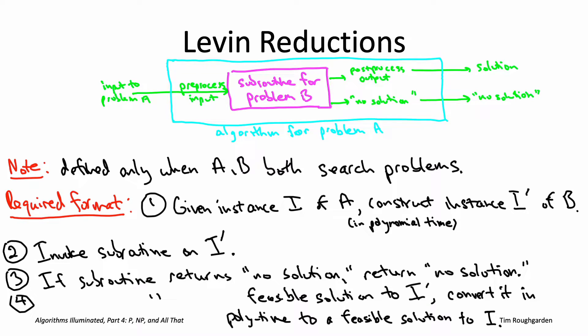In a decision problem, all an algorithm has to do is report yes or no — it's not responsible for handing you a feasible solution on a silver platter. So this cartoon becomes even simpler with decision problems. The magenta box just says yes or no, not giving you a solution in the yes case, and then the light blue box simply parrots that answer: if the magenta box said no, the blue box says no; if the magenta box says yes, the blue box says yes.